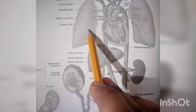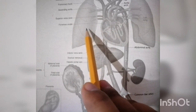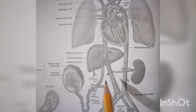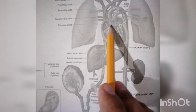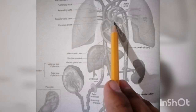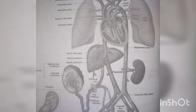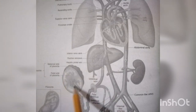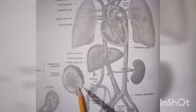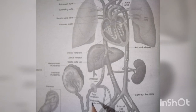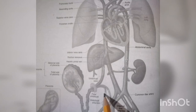Once the lungs are functioning, the shunting of blood is no longer needed, so the foramen ovale closes. The ductus arteriosus closes because the placenta produces prostaglandins that keep the shunts open. When the umbilical cord is cut, prostaglandins decrease and the shunts close.